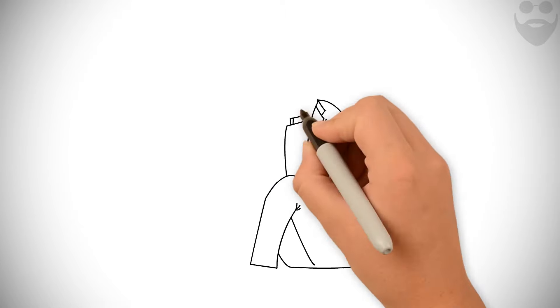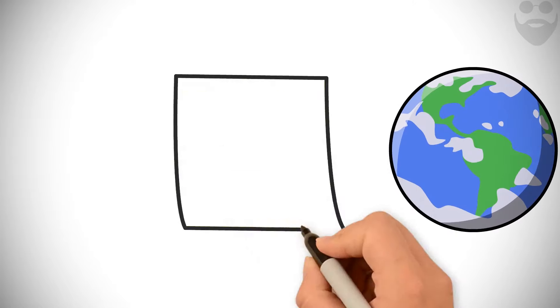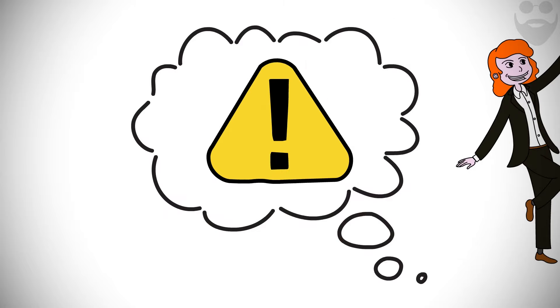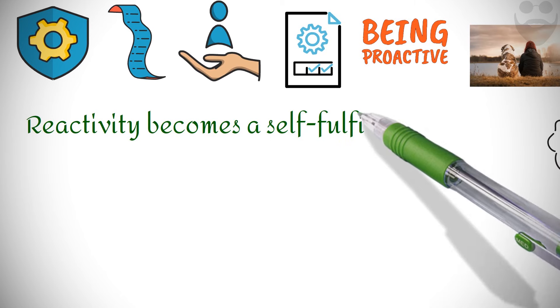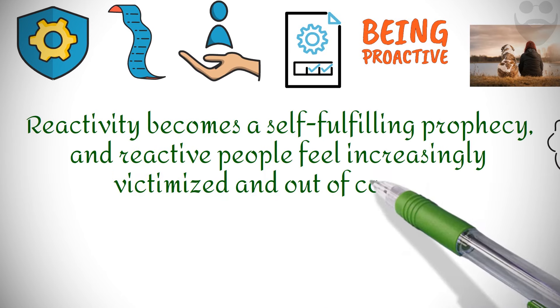Reactive people take a passive stance. They believe the world is happening to them. They say things like, There's nothing I can do. That's just the way I am. They think the problem is out there, but that thought is the problem. Reactivity becomes a self-fulfilling prophecy, and reactive people feel increasingly victimized and out of control.